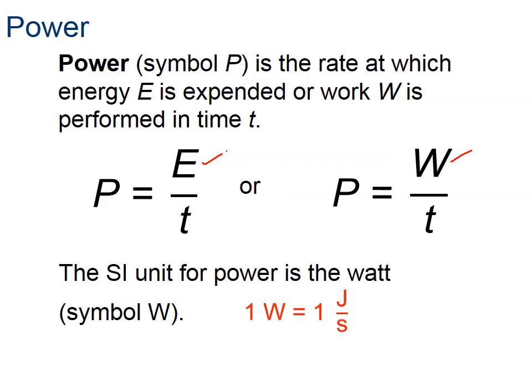The symbol there is P. And as you can see here down at the bottom, energy or work, the units are joules. And if you divide a joule per second, it is called a watt.